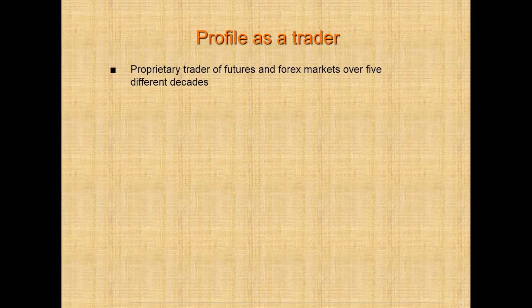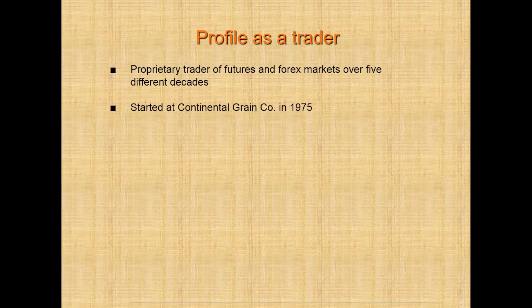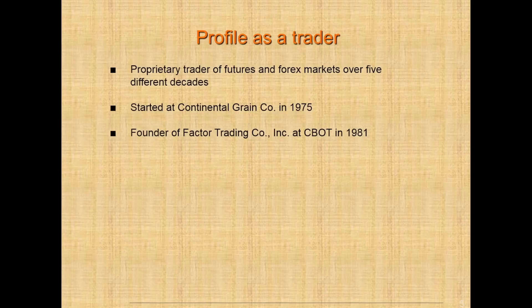I've been a proprietary trader of futures and forex markets over the course of five different decades. I started at Continental Grain Company, which at the time was the second largest grain merchandiser in the world. I started trading corn spreads, specializing in the September-December corn spread on the Chicago Board of Trade. That was 1975. I entered the business with the purpose of becoming a trader for my own account, and I founded Factor Trading Company, Incorporated at the Board of Trade in 1981.